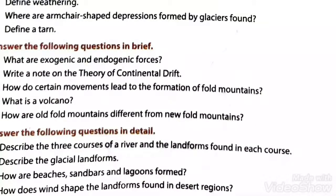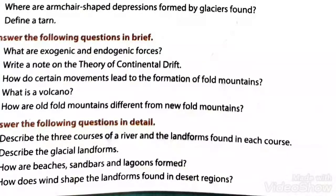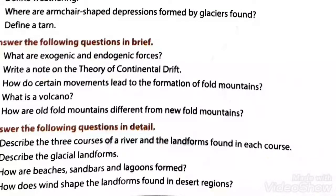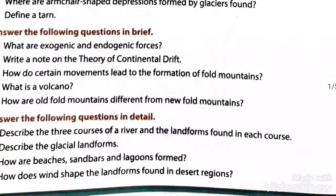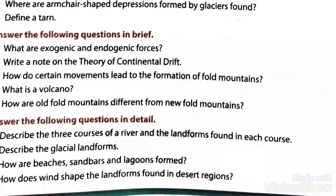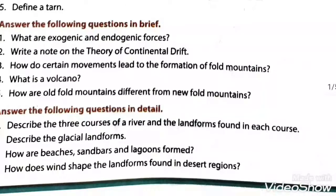Question 2: write a note on the theory of continental drift. Around 1915, Professor Alfred Wegener in his book suggested the theory of continental drift. According to him, all the continents were once joined together as one supercontinent known as Pangaea. This began to break up 200 million years ago, resulting in the drifting apart of the continents from each other.